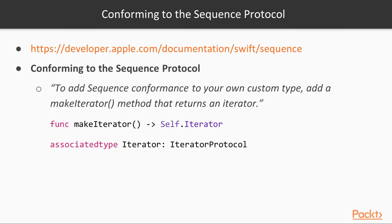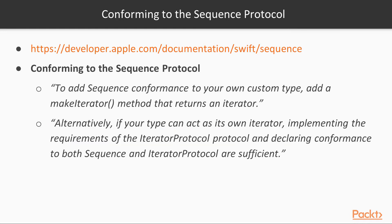Iterator is an associated type, so we must define this type in our implementation. It must be any type that conforms to the IteratorProtocol. There's also a second option: alternatively, if your type can act as its own iterator, implementing the requirements of IteratorProtocol and declaring conformance to both Sequence and IteratorProtocol are sufficient. In our linked list example it's possible to cover both, but we'll use the first method — creating a custom iterator type.